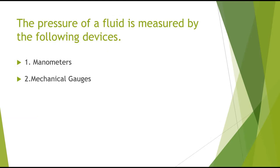Now we study various devices used for measuring the pressure of a fluid, whether stationary or flowing through a pipe or open channel. Generally, two devices are used: the first is a manometer and the second is a mechanical gauge. In this course we will focus on manometers and their various types.